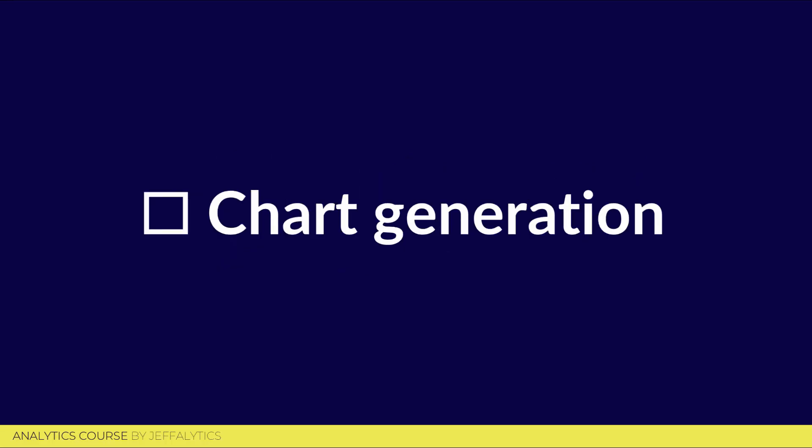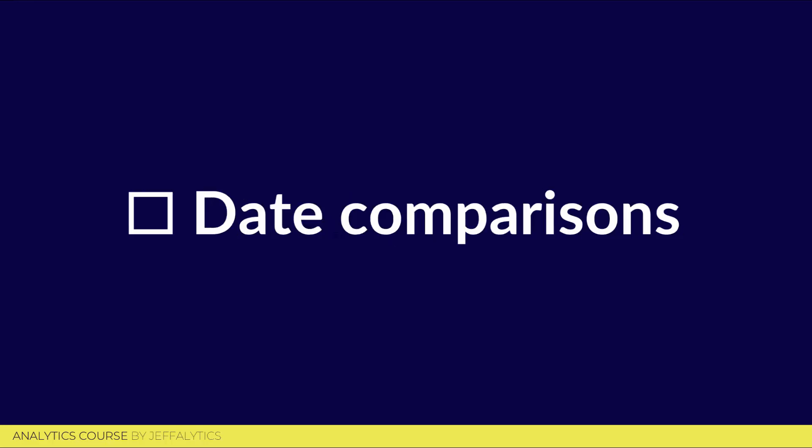Chart generation is also something you can automate — if you're not automating chart generation, charts are very easy to automate now, whether using the Google Charts API, Google Data Studio, or any other number of tools. If you can access and collect the data, you should be able to create a chart from it. You can also automate date comparisons — looking at this month compared to last month or year over year — within your API calls and within Google Data Studio. If you're not sure about any of these things, check out our other videos and our full class on Google Data Studio.